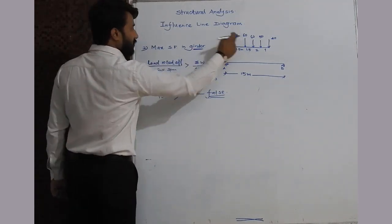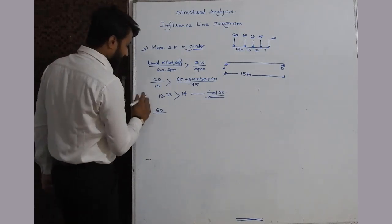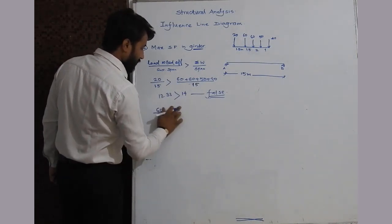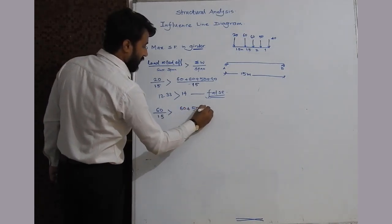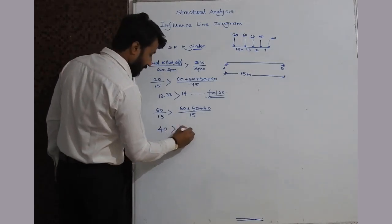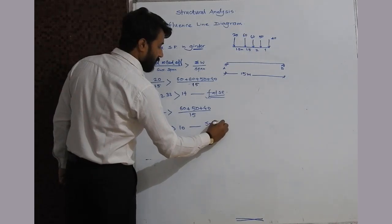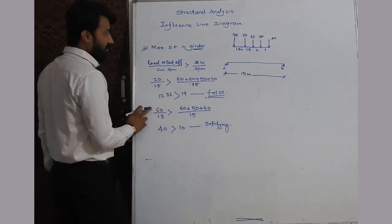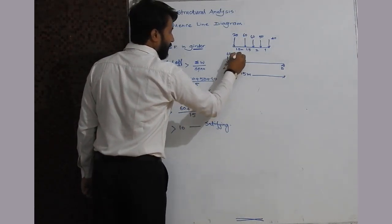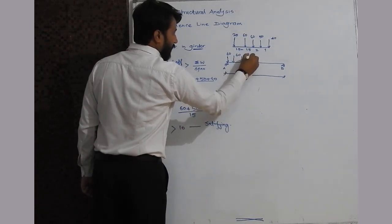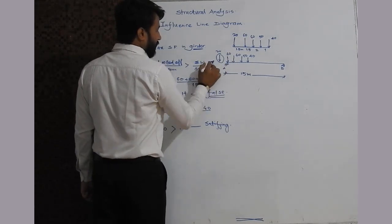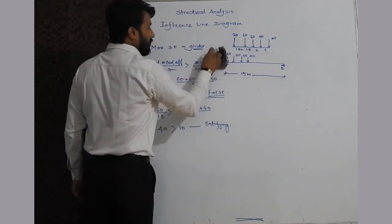For trial 2, the next load is 60 kN. So 60 divided by succeeding span 1.5 should be greater than the remaining load (60 plus 50 plus 40) divided by 15, which gives 40 and 10 respectively. This condition is satisfied, so we keep the 60 kN load on support A. The arrangement is: 60 at A, then 60, 50, 40. The 20 kN load falls outside the girder and is excluded from the calculation.